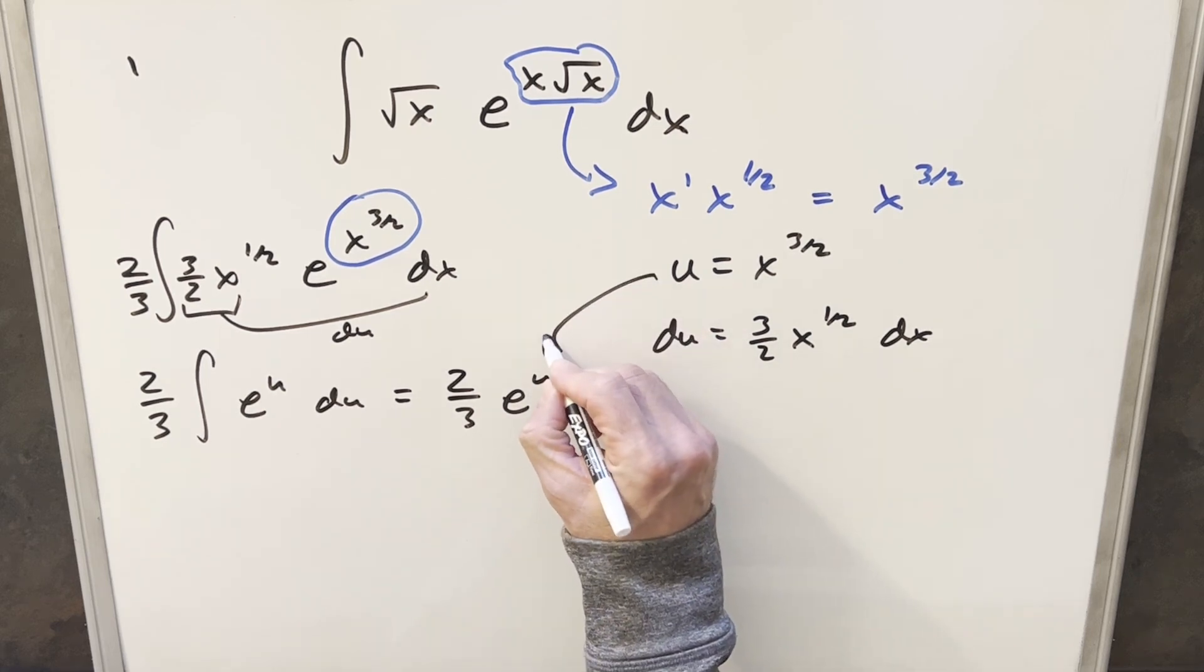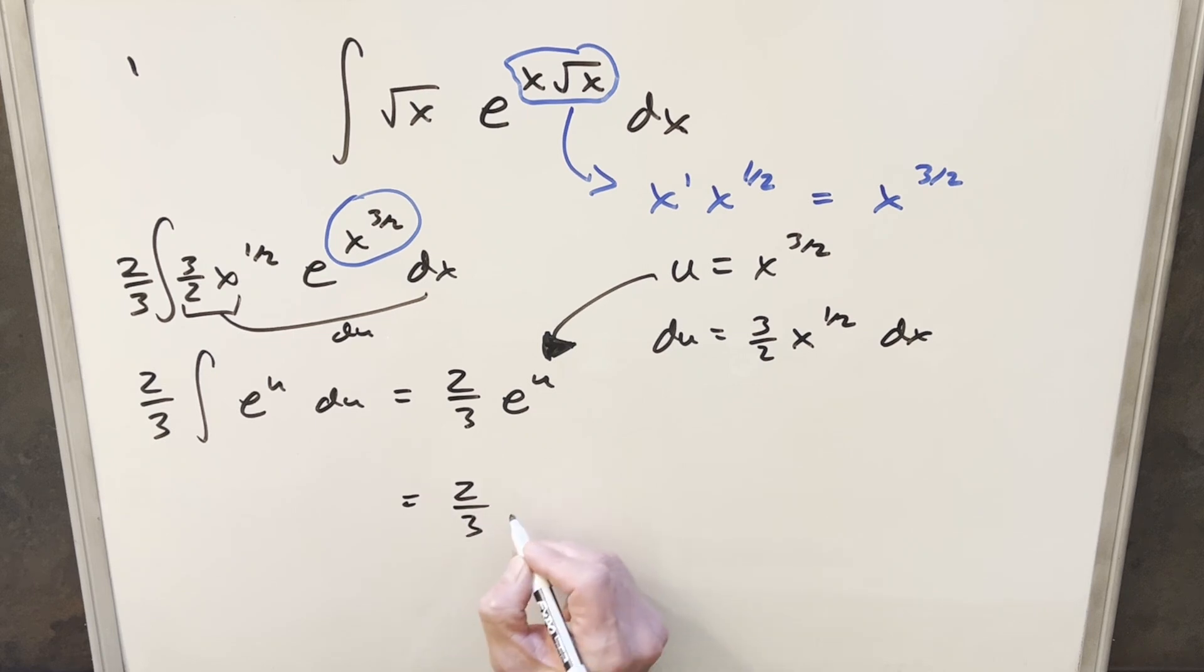We'll back substitute. And so for my final solution, we'll just have 2 thirds e to the x to the 3 halves plus c, and that's it.